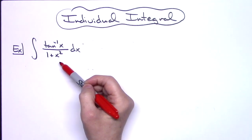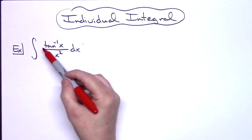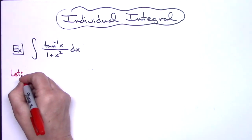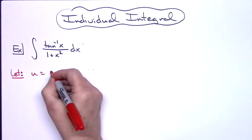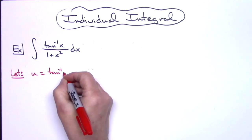So what I'm going to do is let my u be that inverse tangent of x. So we're going to let u equal inverse tangent of x.